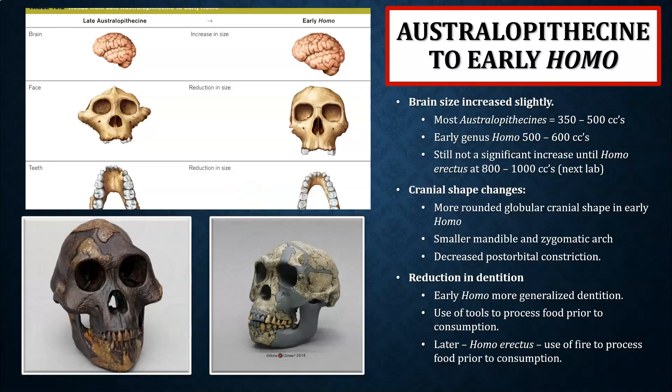This is the continuation of our presentation on the australopithecines and early members of genus Homo. This will correlate with Chapter 10 in the Explorations textbook, Chapter 10 in the Essentials textbook, and also goes along with Lab Number 15 in the Biological Anthropology lab manual.